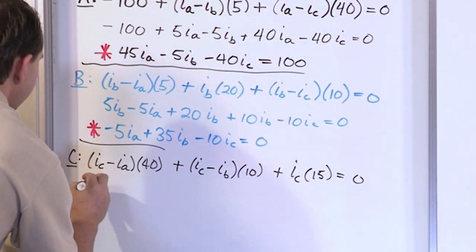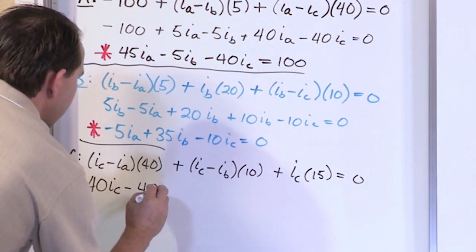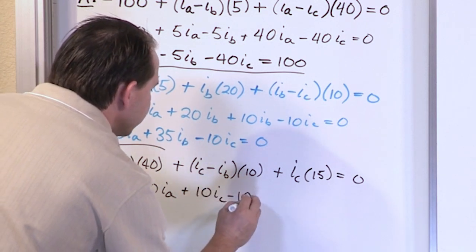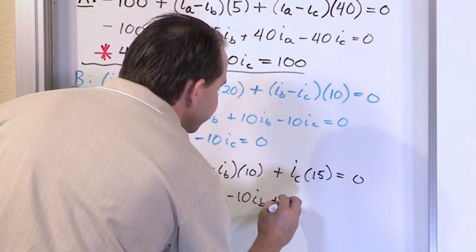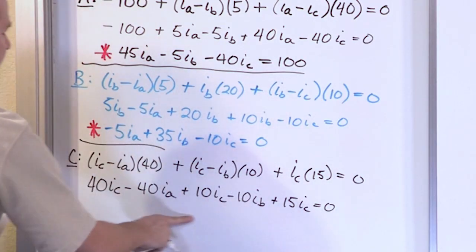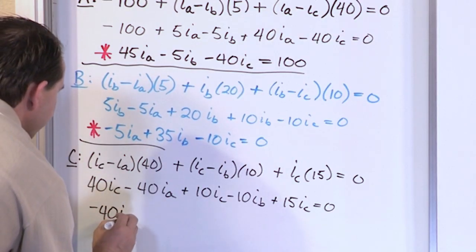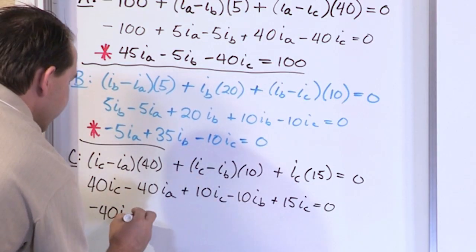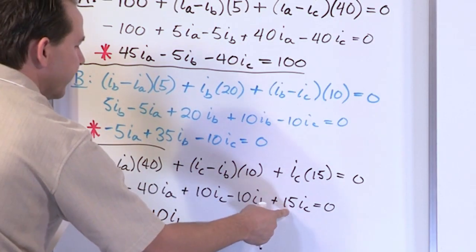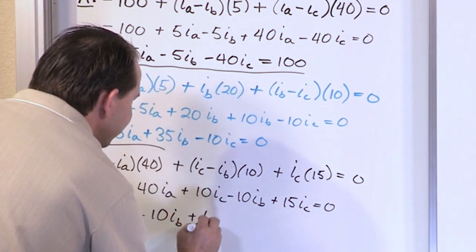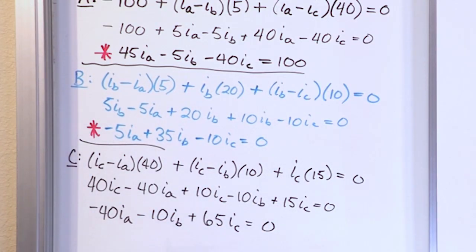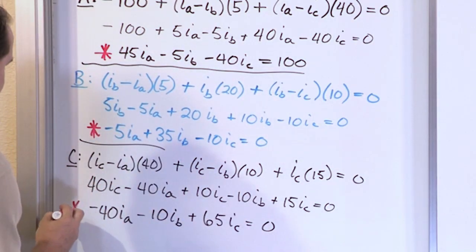Simplifying mesh C: 40(IC − IA) + 10(IC − IB) + 15·IC = 0. Distributing: −40·IA − 10·IB + 65·IC = 0. There are no constant terms, so the right-hand side is zero. That is the third and final mesh current equation. We now have three equations and three unknowns.